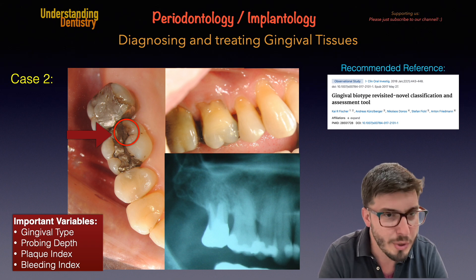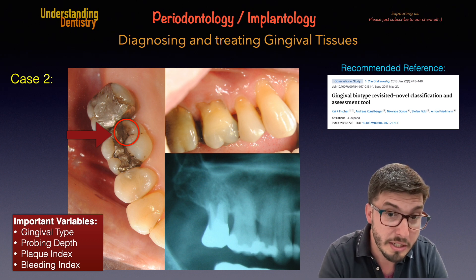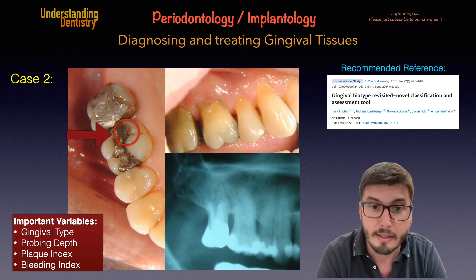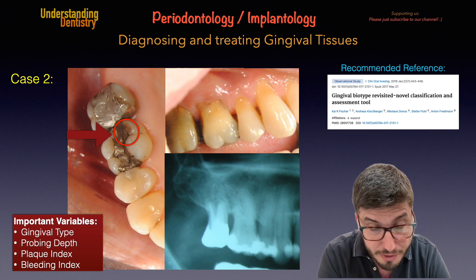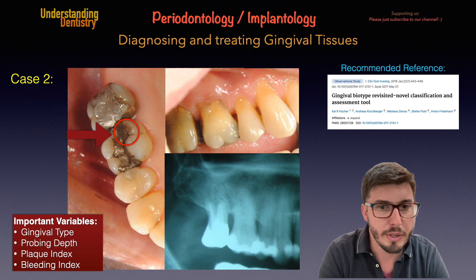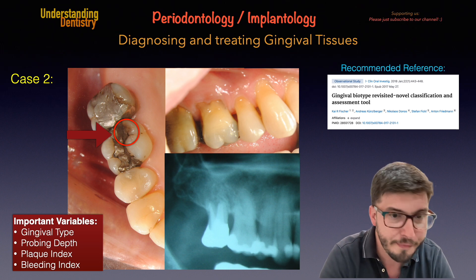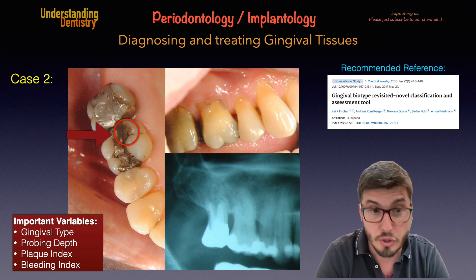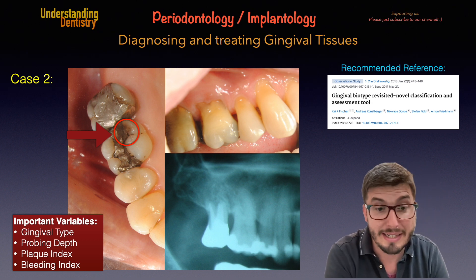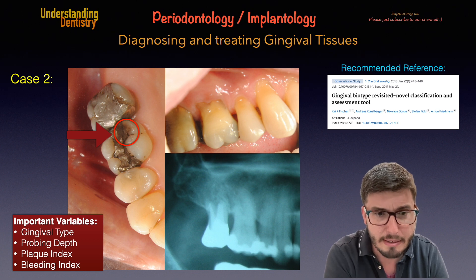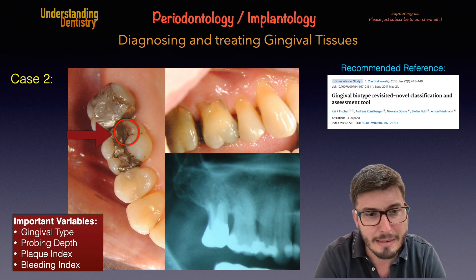The patient came in trying to treat this, and is now feeling pain to percussion. There is an existing root canal treatment. You could take a CBCT when there is suspicion of fracture. There is a risk of fracture along with these compromised alveolar crest levels, so it was decided to extract and place an implant on the second molar.